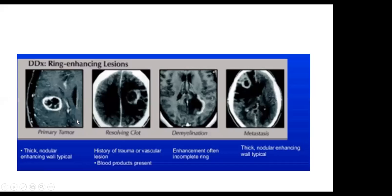Neuroimaging differentiation of ring-enhancing lesions: primary tumors have a thicker and more nodular wall, and the necrotic center usually does not show restricted diffusion on DWI and ADC map. Resolving clot usually has a history of trauma and vascular lesion with blood products present. Demyelination shows an incomplete ring. Metastases also have a thicker and more nodular wall.